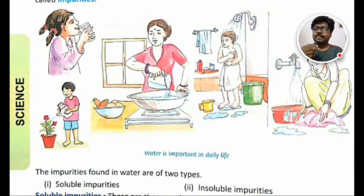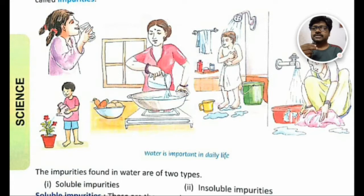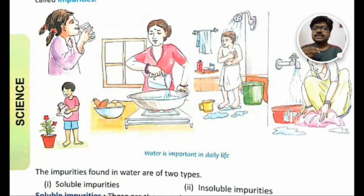Students, can you see the image displayed on the screen? What is the girl doing, and what is the boy doing? A man and two women — what are they doing? Looking at this image, you can see everyone is commonly using water. The girl is drinking water, the boy is watering a plant, a lady is cooking food using water, a man is bathing, and a woman is washing clothes using water.